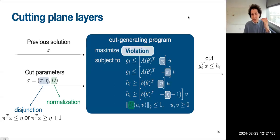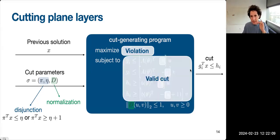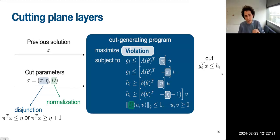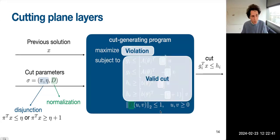The cutting plane layers solve a cut-generating program. They take the previous solution and cut parameters depending on a disjunction used to generate the actual disjunctive cut — obtaining an inequality defined by G_i and H_i that is valid for the two remaining sub-regions after performing the disjunction. The objective of this program is to maximize the violation — how much the new cut violates the current point — with additional constraints defining validity based on the disjunction and feasible region A(theta) and B(theta). This is a second-order cone program that, when solved, gives a new cut.